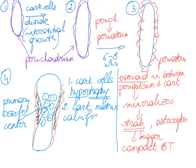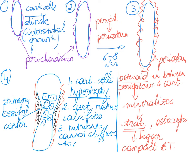When the cells die, they also cannot maintain the cartilage matrix anymore. What we see happening is that little spaces start to appear where the cartilage cells are dying and where the cartilage matrix is slowly but surely starting to deteriorate.